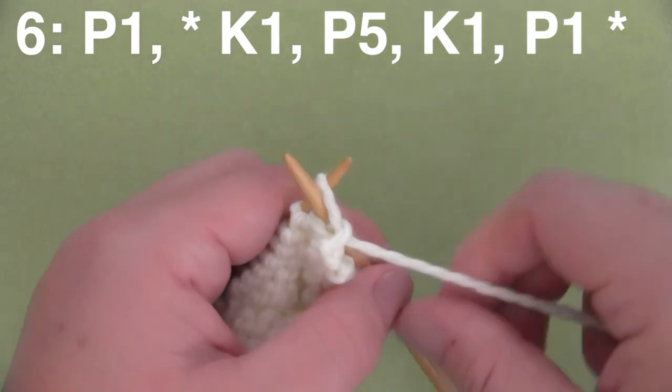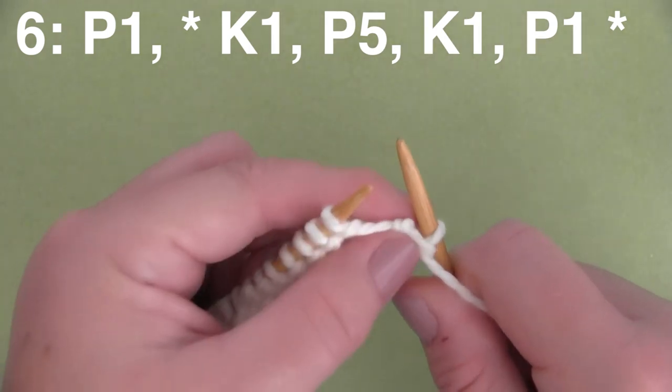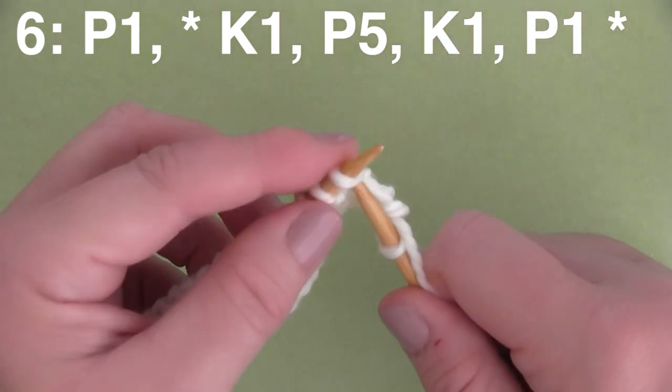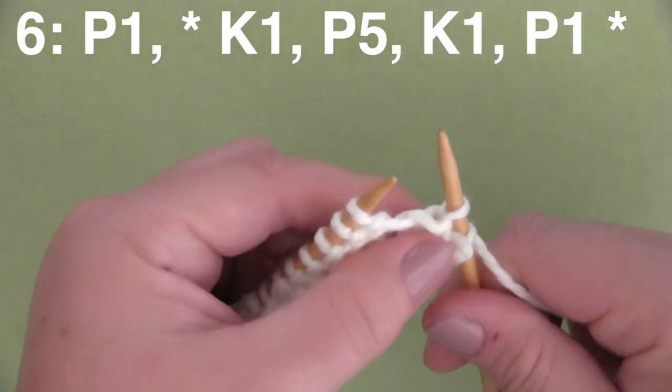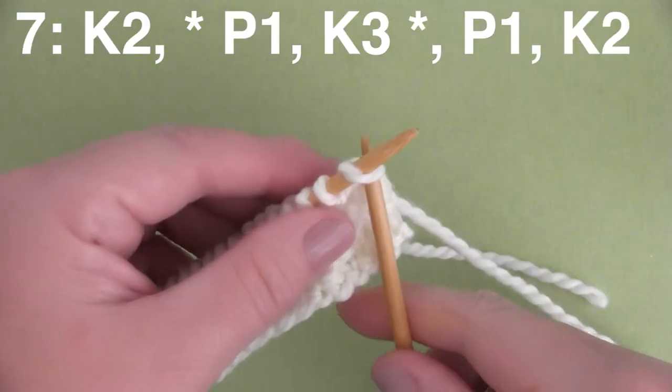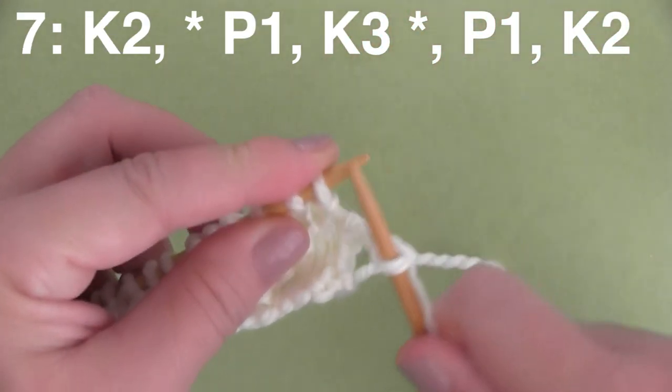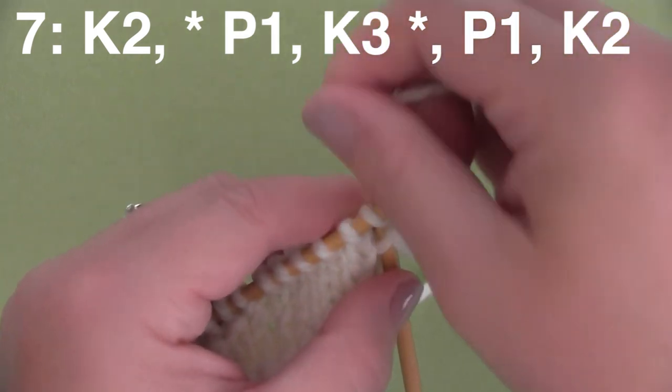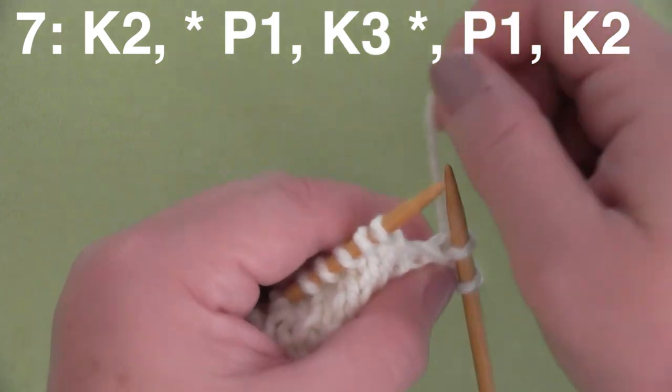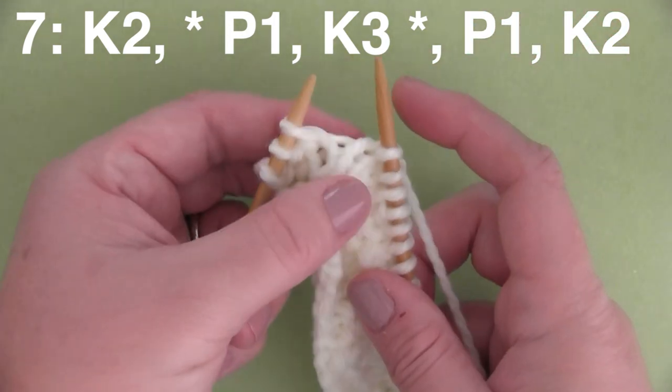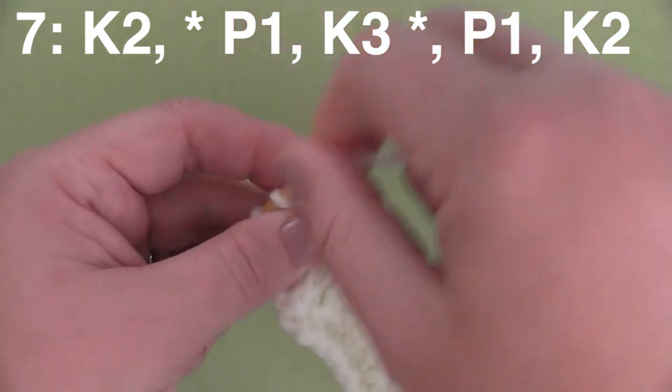So Row 6 is actually exactly the same as Row 4. So, you start with the purl 1, and then you do the stitch pattern between the asterisks right there. Row 7 is identical to what we did in Row 3. So again, we just start with two stitches. And then we have the repeat of purl 1, knit 3, until you get to the last three stitches. And then it's just purl 1, and knit 2.